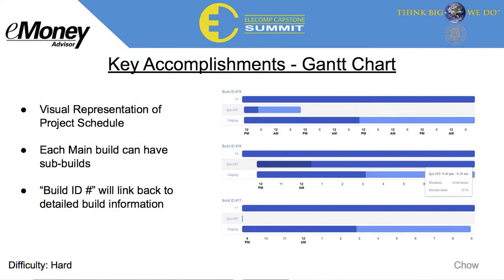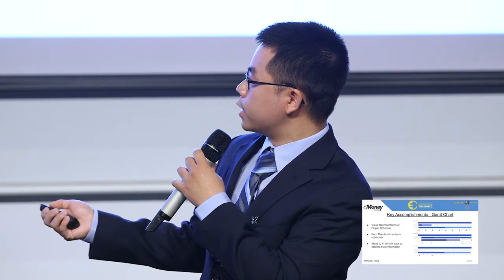Our next key accomplishment is the Gantt chart, which was crucial in the design of our web application. It consists of a main build along with any sub-builds for that project. We also implemented additional features: hovering over a build like QA site will display a text box with the specific details of that build, and clicking the build ID numbers at the top of each Gantt chart will link you to the original source of the API data.